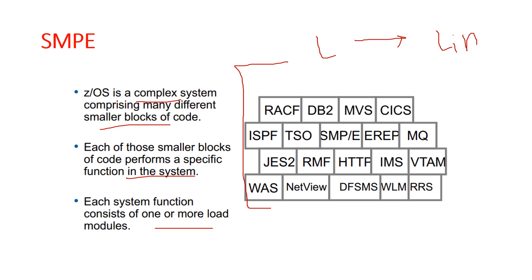In the previous video we covered what the link edit process is and the function of link edit. The link edit process resolves external references and addresses so that the code can function on your system. One or more object modules are combined through the link edit process. Most of the time object modules are sent to you as part of a product, but other times you might need to assemble source code sent by the product package to create the object module, and you can modify the source code and then assemble it to produce the object module.